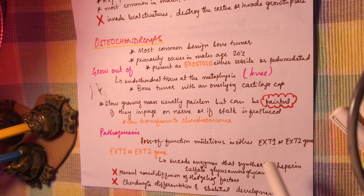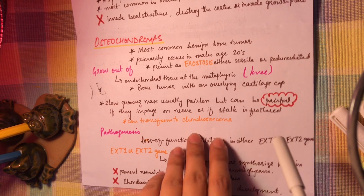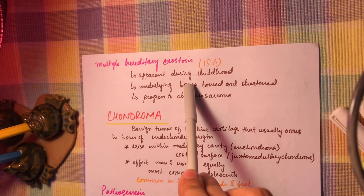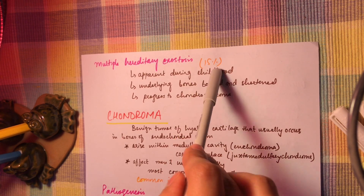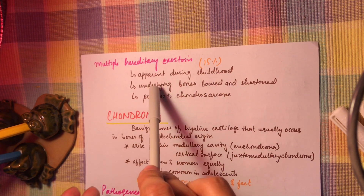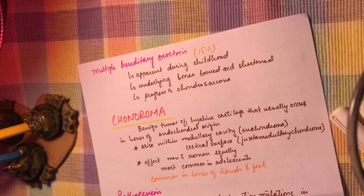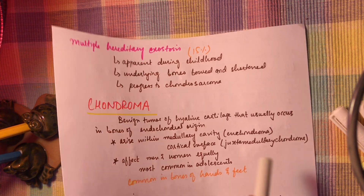There are two types of osteochondromas: the solitary type, which is less likely to transform into chondrosarcoma, and multiple hereditary exostoses, which occurs in about 15% of cases. Multiple hereditary exostoses is apparent during childhood — the underlying bones are bowed and shortened — and these are more likely to progress into chondrosarcoma.